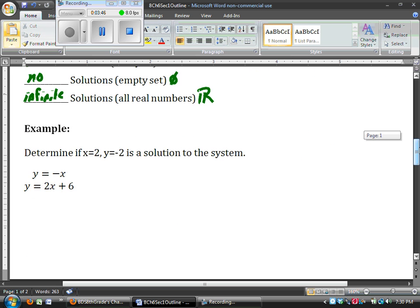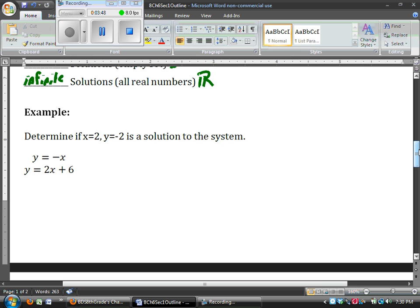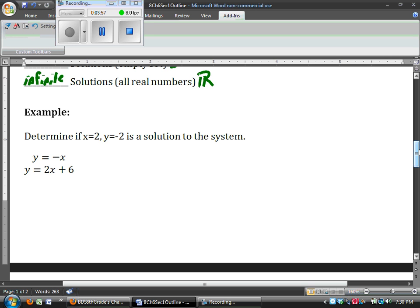First, let's talk a little bit about solutions to the systems here. I want to know if x equals 2 and y equals negative 2 is a solution to this system. The system is y equals negative x and y equals 2x plus 6. So if it's supposed to be a solution, that means it makes both equations true.